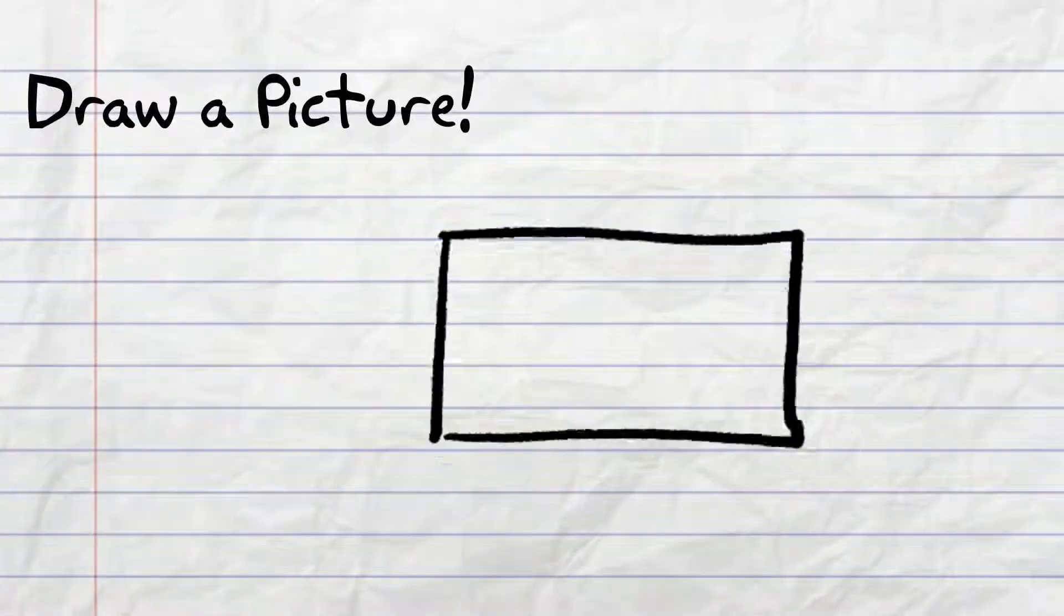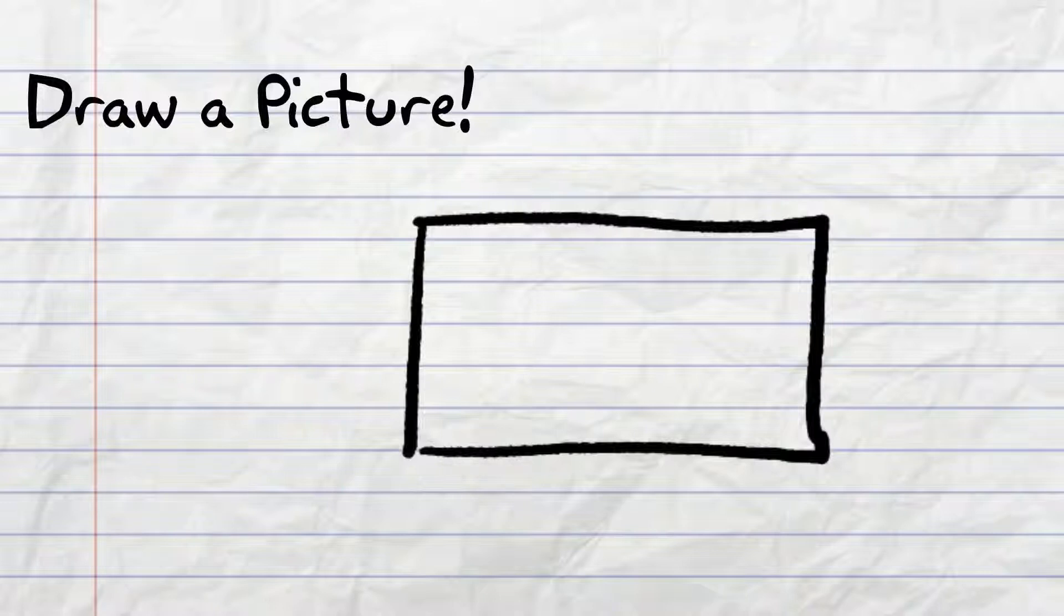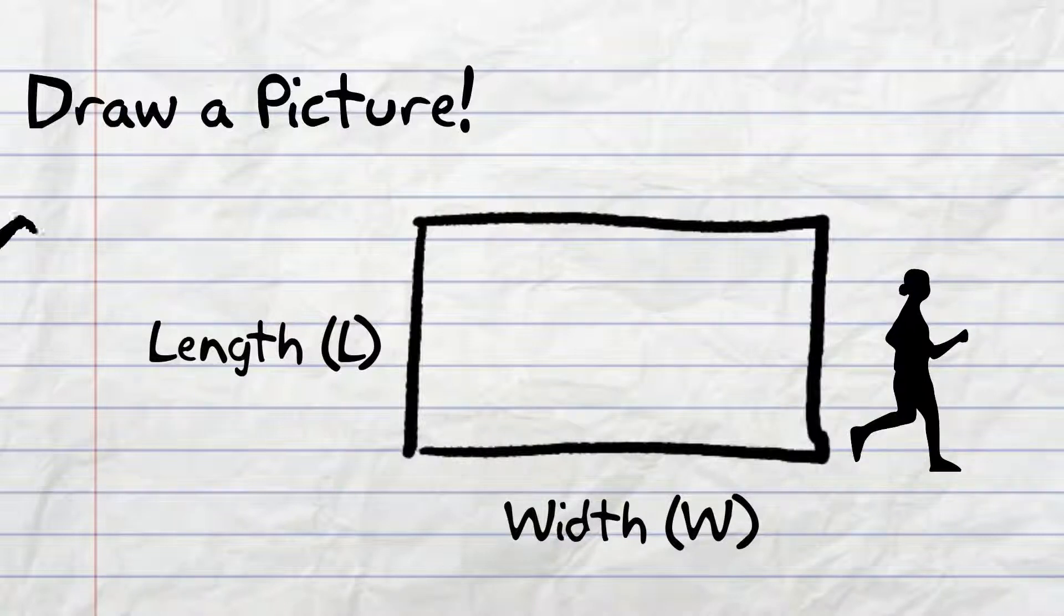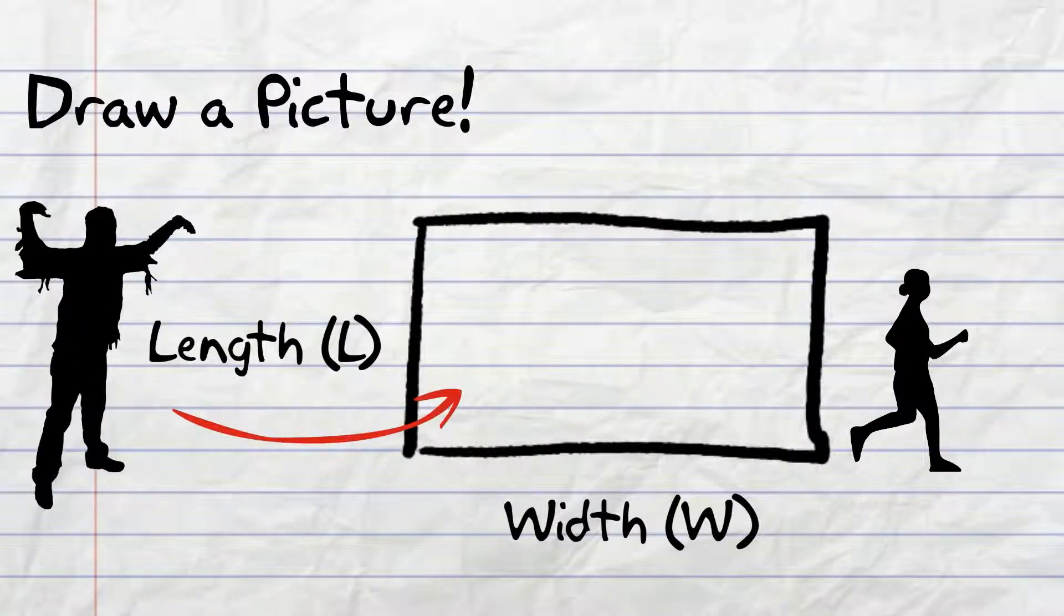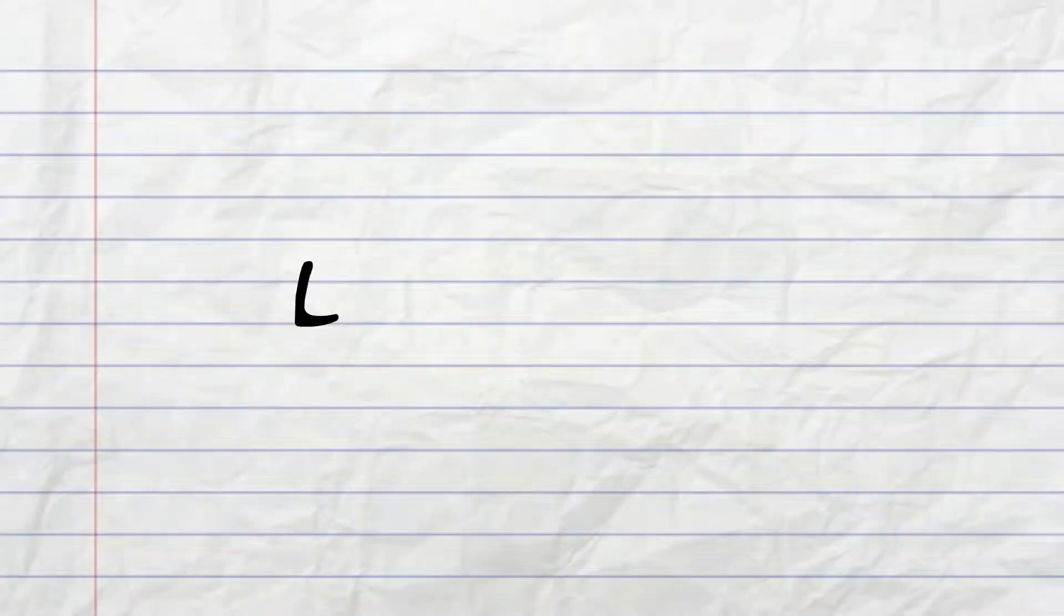Let's go ahead and draw a picture. Here's our zombie pit. I'm going to label the sides width and length. I'm assuming our hero runs past the zombie pit and hopes to lure our zombie into it. Our goal is to write our length of the zombie pit in terms of W, the width.